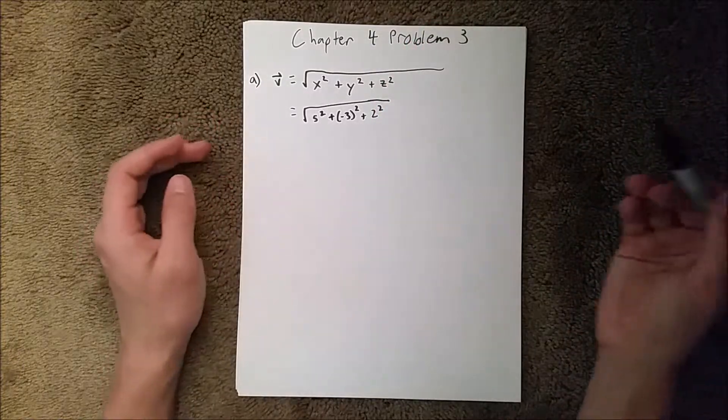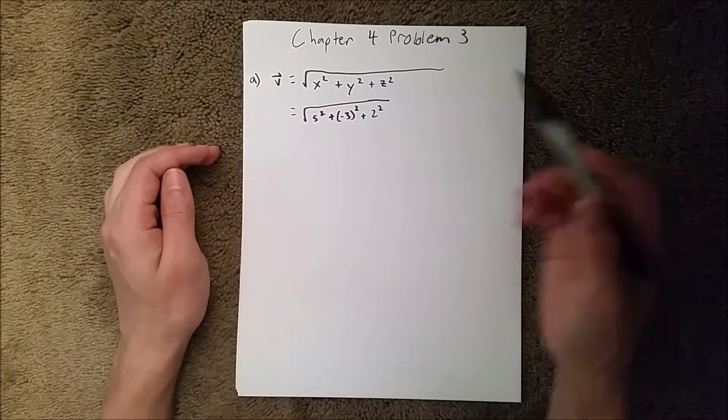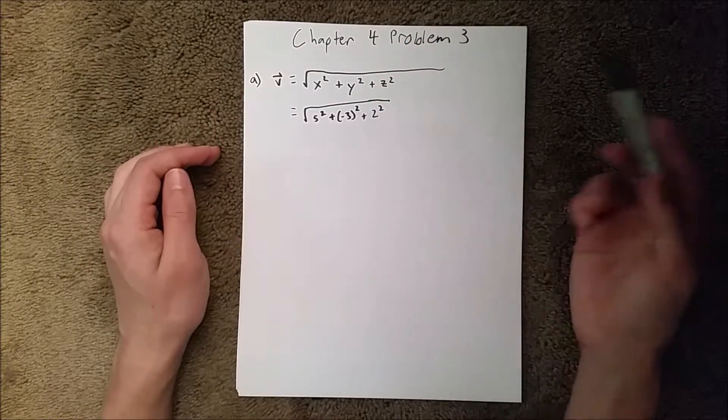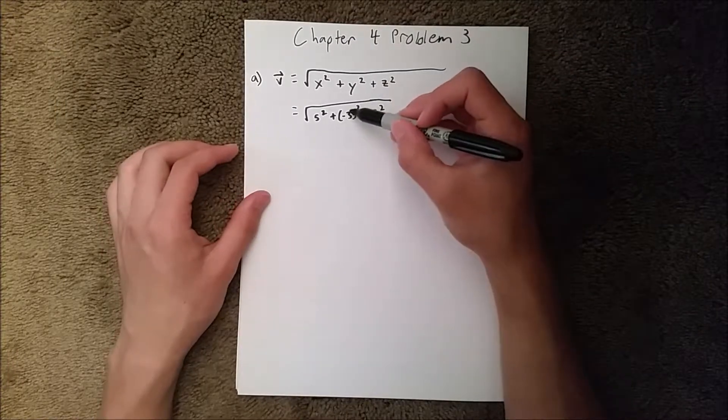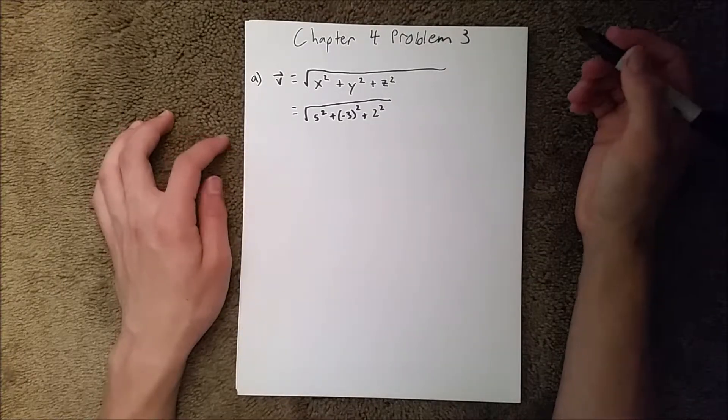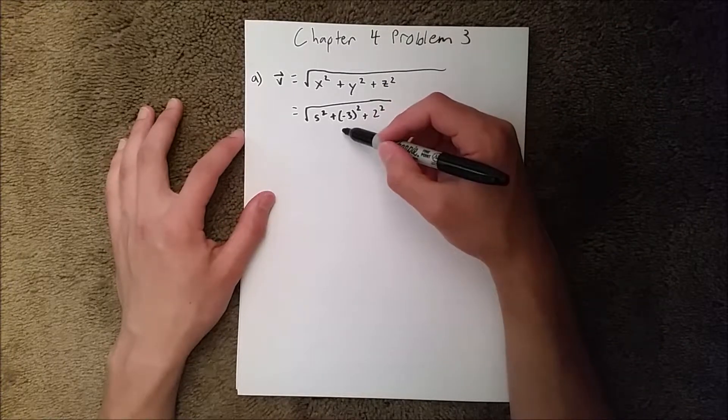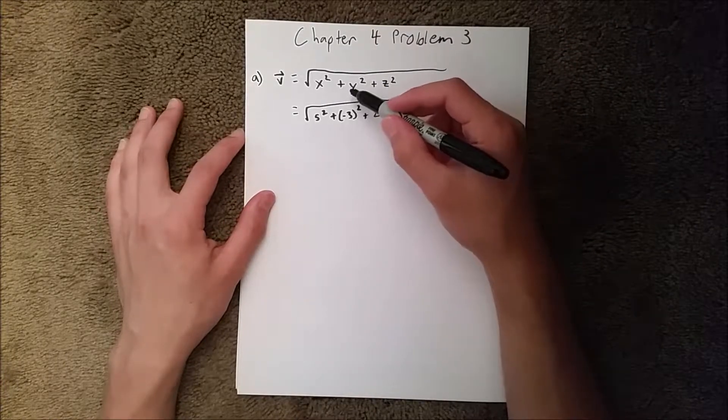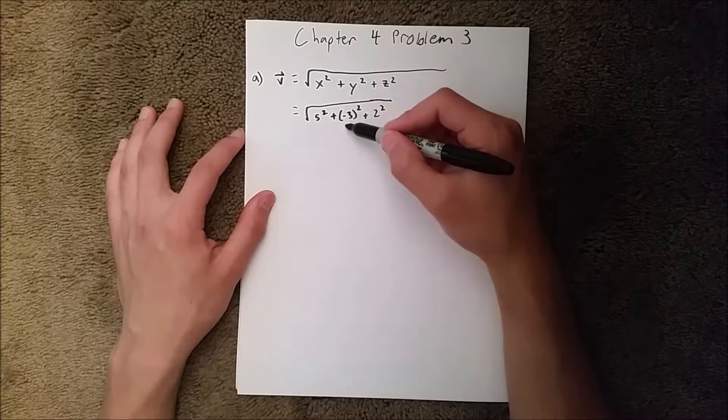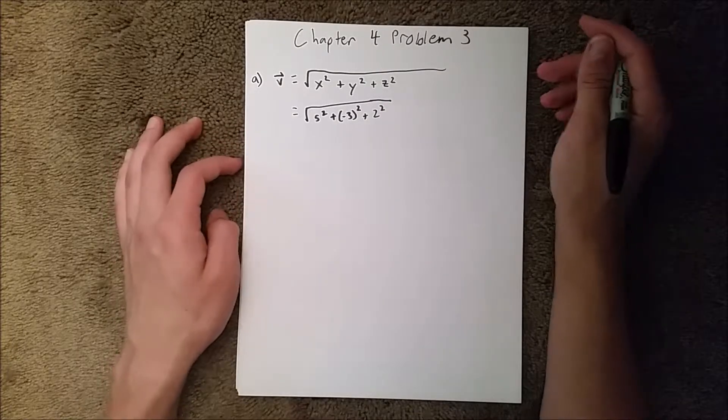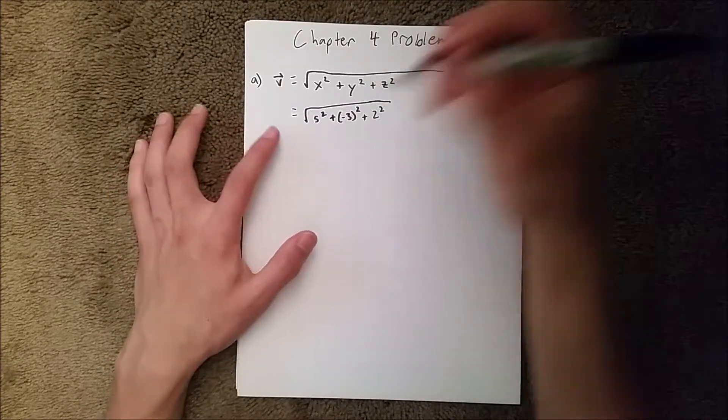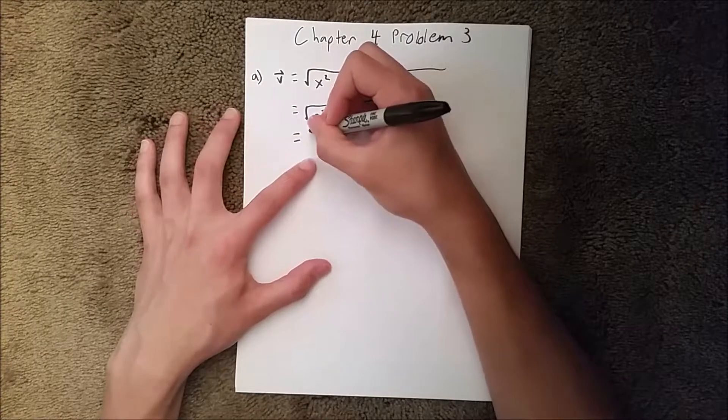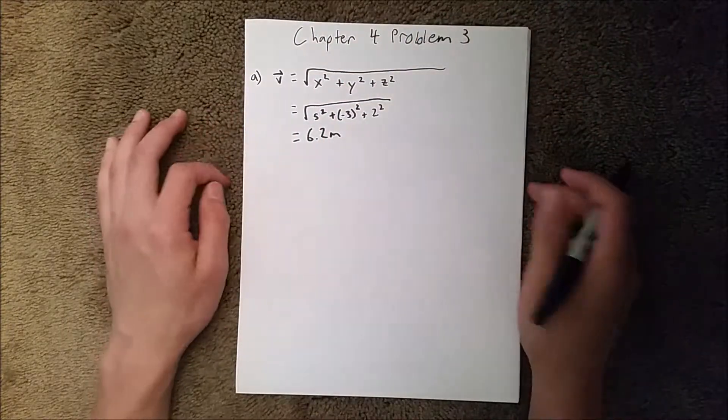One thing you just need to make sure is if you have a negative component, like negative 3 here, you have to square the whole thing so that negative 3 becomes positive 9. You've got to just make sure the parentheses on the outside of the negative, not on the inside of it. So just make sure you keep your signs straight. And then when you do that, you should get 6.2 meters for the magnitude.